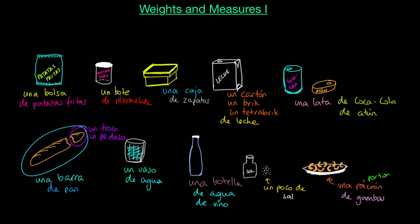So, to summarise, we have: una bolsa, un bote, una caja, un cartón o brick o tetrabric, una lata, una barra, un trozo o un pedazo, un vaso, una botella, un poco, and una ración — lots of different ways to describe how we package or serve things.